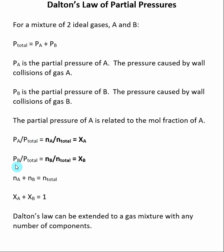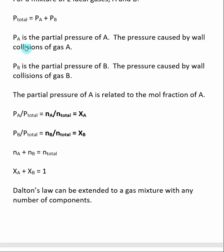We can say the same thing about gas B. The partial pressure of B divided by the total pressure is equal to the number of moles of B divided by the total number of moles, and this equals the mole fraction of B, or X sub B. Just as the total pressure equals the partial pressure of A plus the partial pressure of B, the total number of moles of gas equals the number of moles of gas A plus the number of moles of gas B. The mole fraction of A plus the mole fraction of B equals 1. The mole fraction tells us what percentage of the total moles is due to gas A and what percentage is due to gas B.